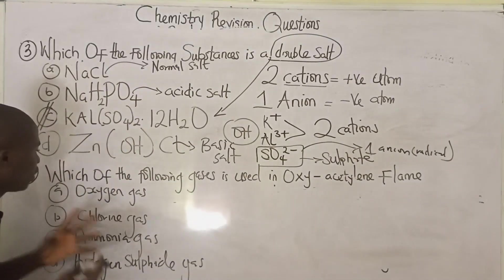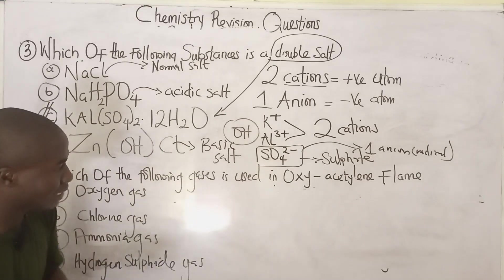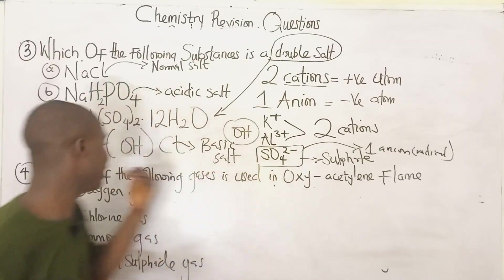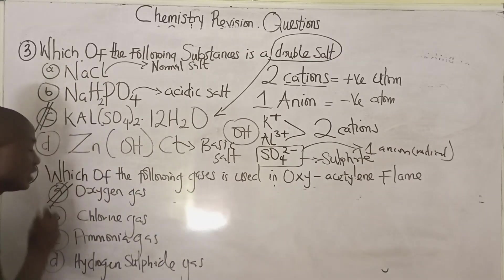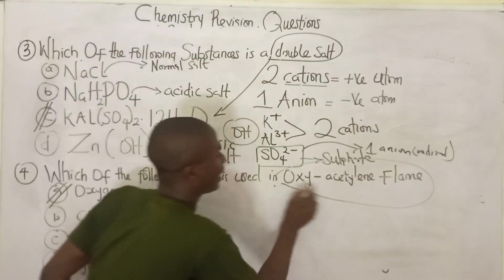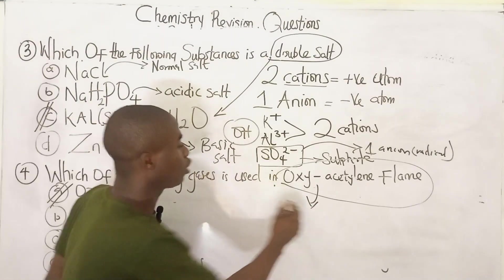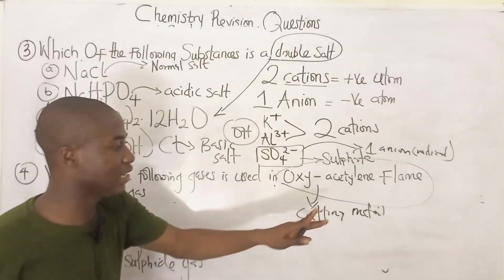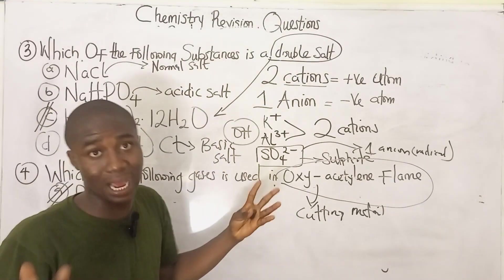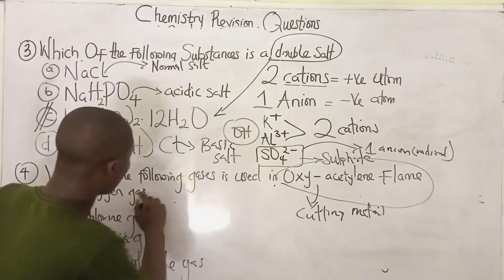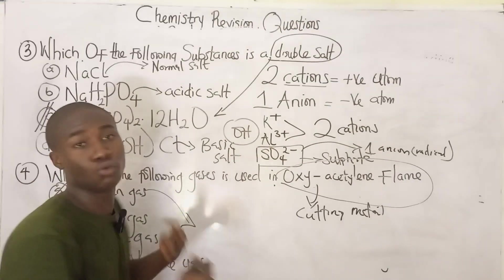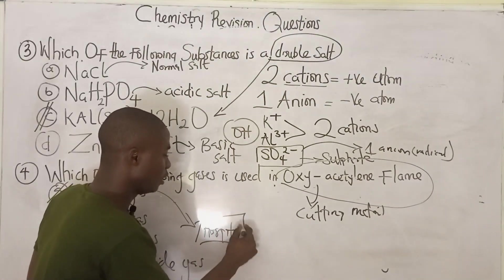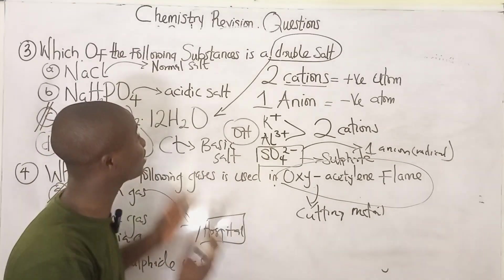Question four asks: which of the following gases is used in an oxyacetylene flame? The gas that performs this function is oxygen. The oxyacetylene flame is used for cutting metals, and it is produced using oxygen gas. Oxygen gas is also used in hospitals to resuscitate patients.